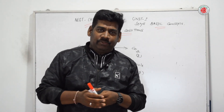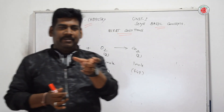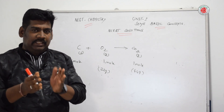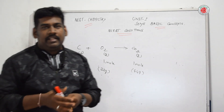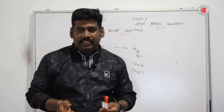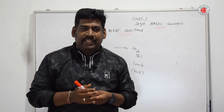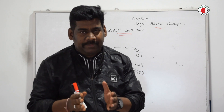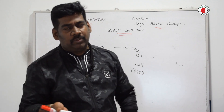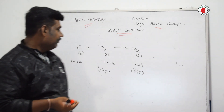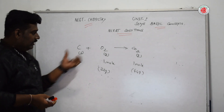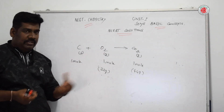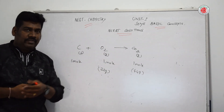For the third question: 16 grams of dioxygen is available and is the limiting reagent — it can combine with only 0.5 mole of carbon to give 22 grams of carbon dioxide. This is the overall chemical reaction for the given question.